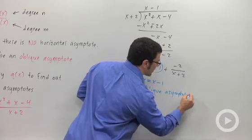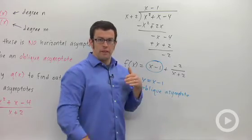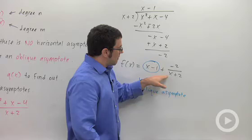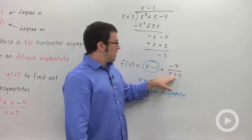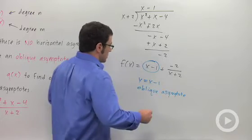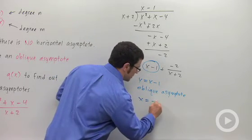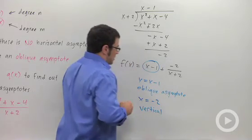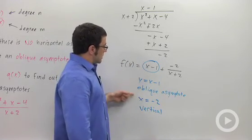Now you can either find the vertical asymptotes in the beginning, or you can do it now. Because you're always going to have this denominator here. x plus 2 equals 0 when x is negative 2. So x equals negative 2 is going to be your vertical asymptote. And those are the two asymptotes for this function.